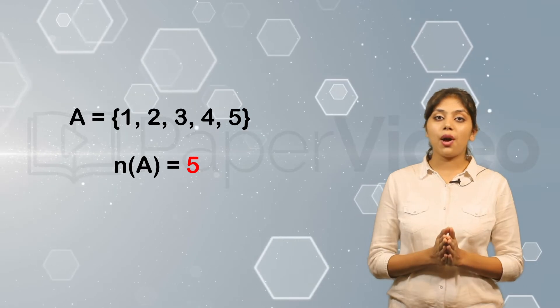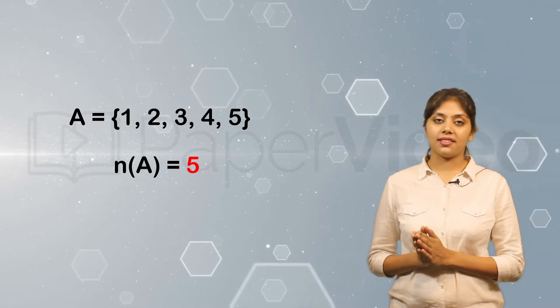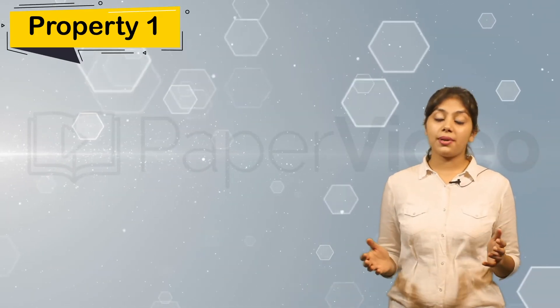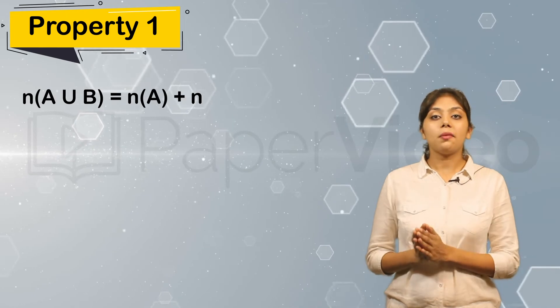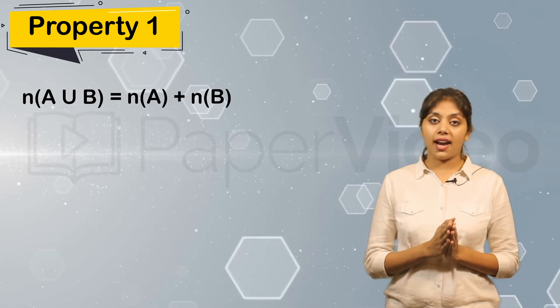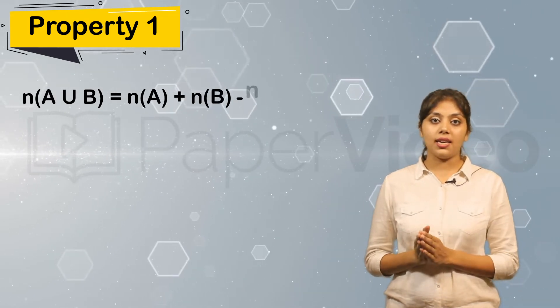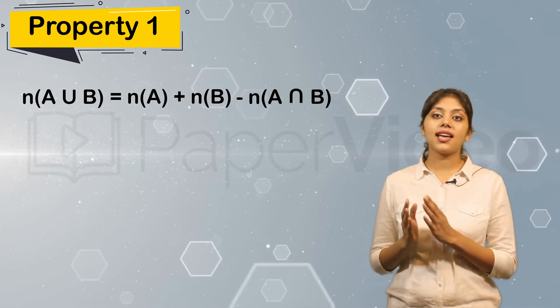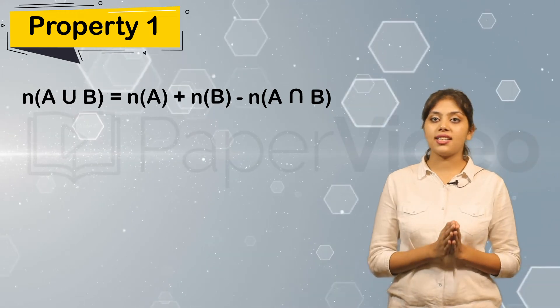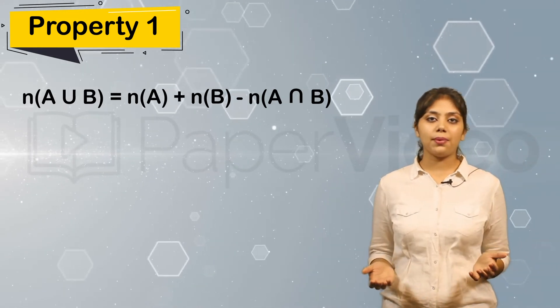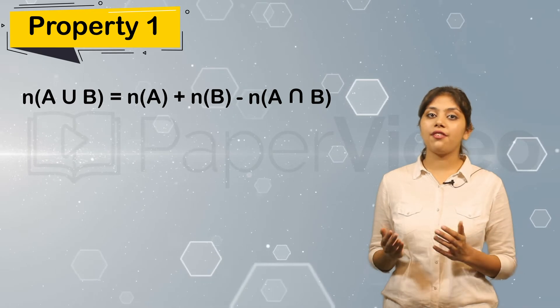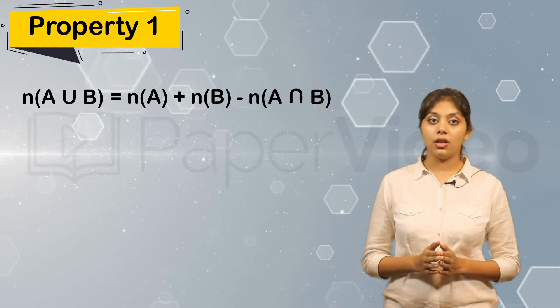There are some properties of cardinality of the set. The first property says that the cardinality of union of two sets A and B is equal to the sum of the individual cardinalities of sets A and B, minus the cardinality of the intersection of sets A and B. Let us understand this property with the help of a Venn diagram.